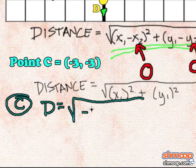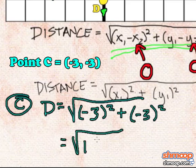Point C is minus 3, minus 3, which gives us the square root of 18.